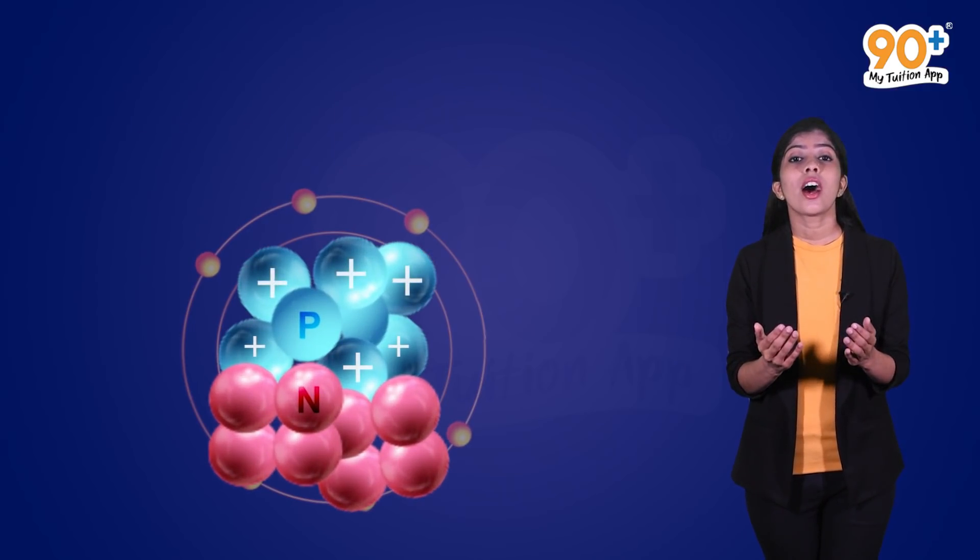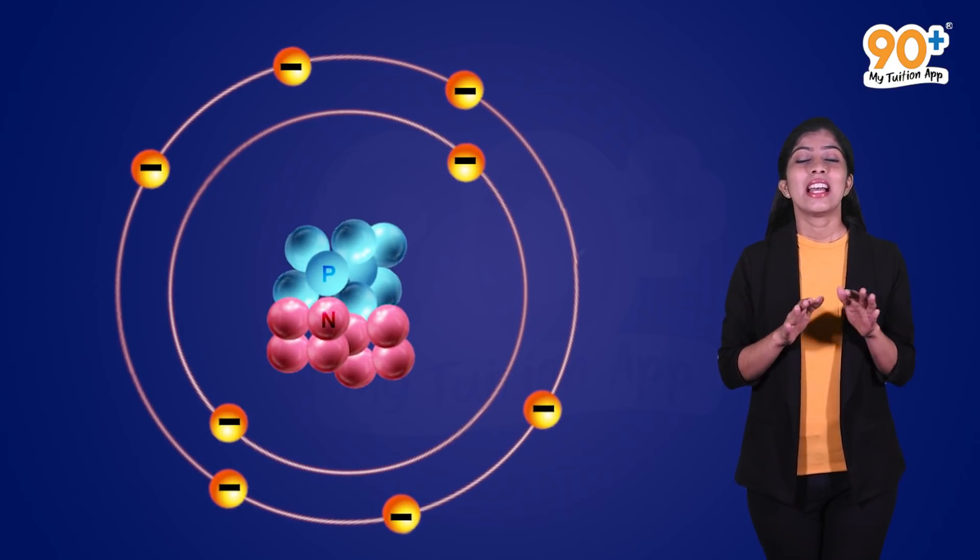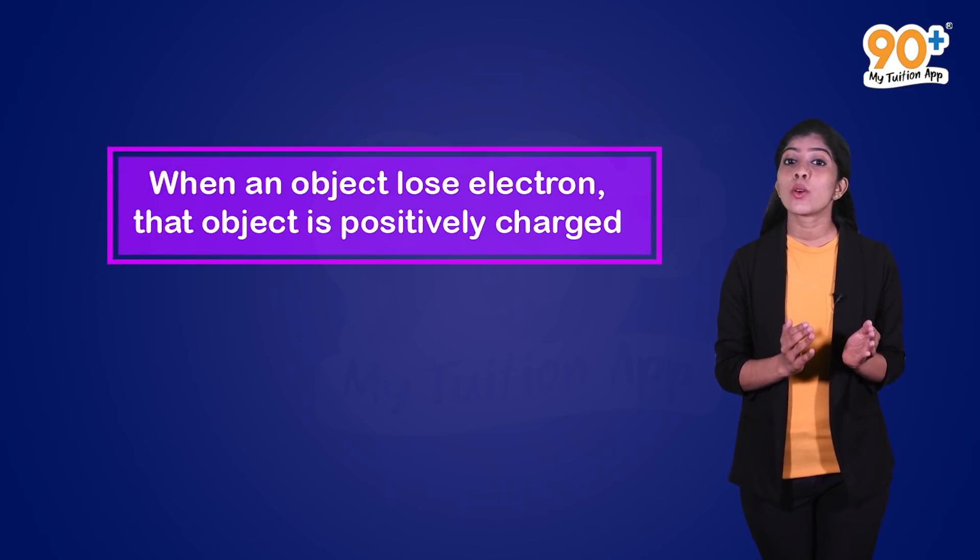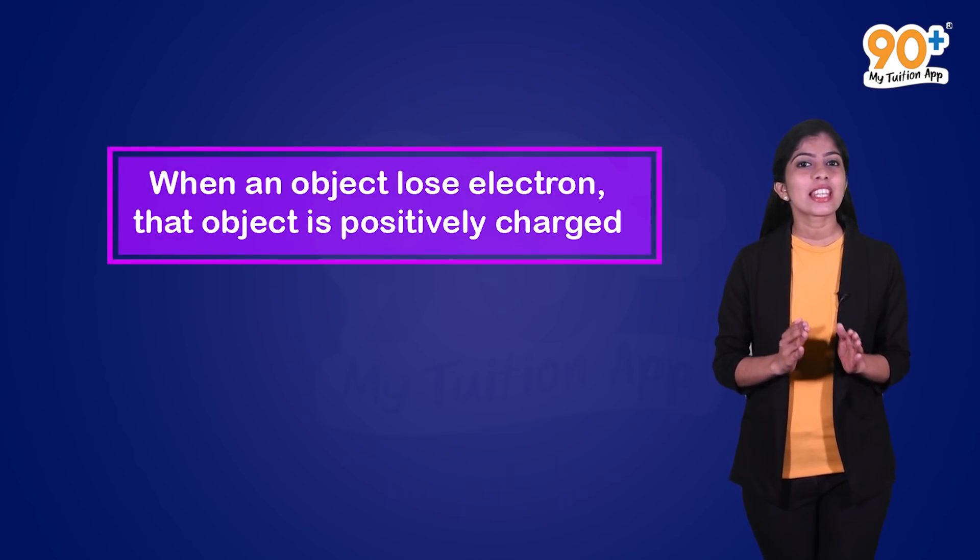Here, protons are positively charged and electrons are negatively charged. Whenever an object loses electrons, we can say that the object is positively charged.